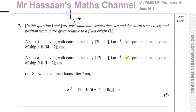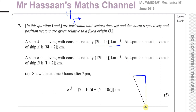Ship A is moving with constant velocity 2i − 14j km/h. That tells you the direction and the distance it moves in one hour — every hour it's going 2 km to the right and 14 km down, moving in that trajectory. That is the velocity vector of ship A: 2i − 14j gives the direction and magnitude in which it travels every hour.